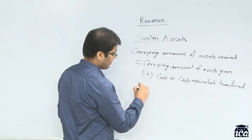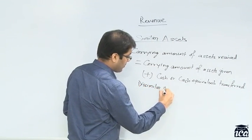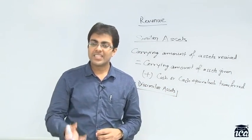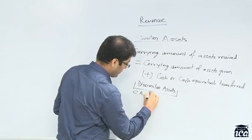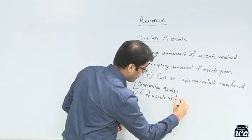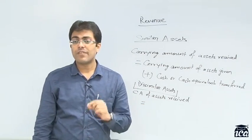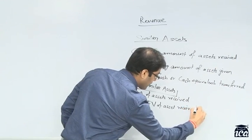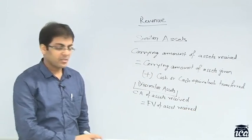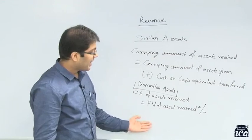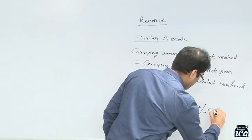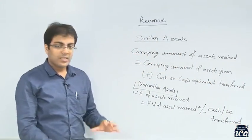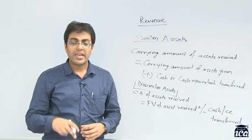But what if there are dissimilar assets? In case of dissimilar assets, the carrying amount of asset received is equal to the fair value of asset received, plus or minus, that is adjusted by any cash or cash equivalents given. It is the rules prescribed under IFRS in case of exchange transactions.